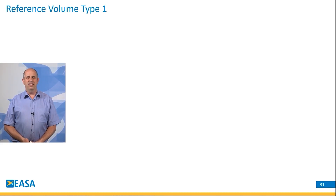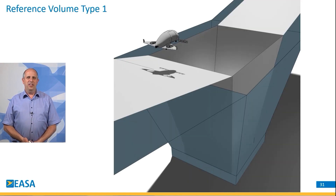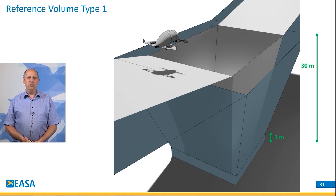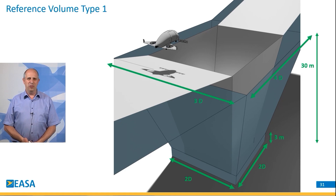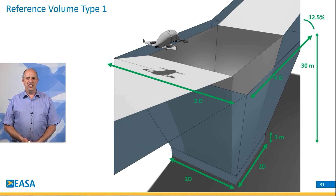The reference volume type 1 has been designed by the Vertiport Task Force mentioned earlier in this presentation. It has the following dimensions: the vertical portion goes up for 3 meters, and then the funnel up to 30 meters. The footprint on the ground is 2D by 2D, while at height it is 3D by 4D. From there, you have the obstacle limitation surfaces climbing with a gradient of 12.5 degrees. This volume has been designed specifically for obstacle-rich environments, and we have tested it virtually throughout the world in a number of cities to see how it would fit.